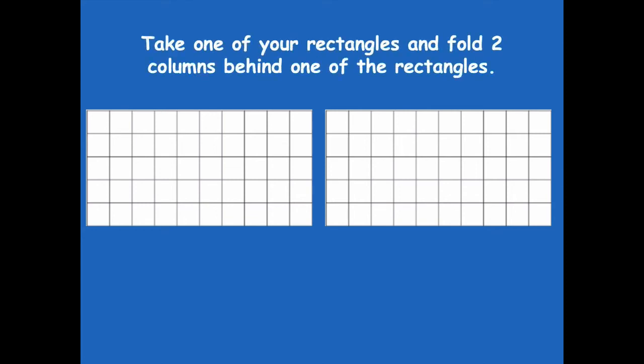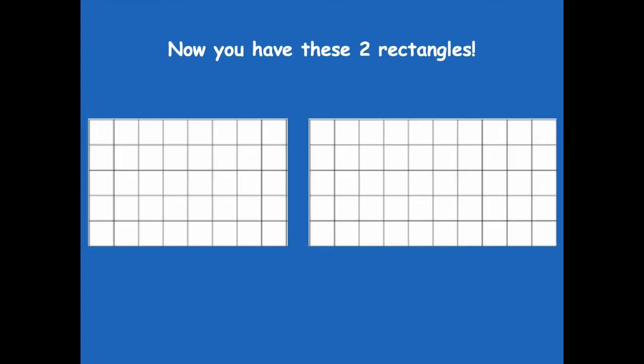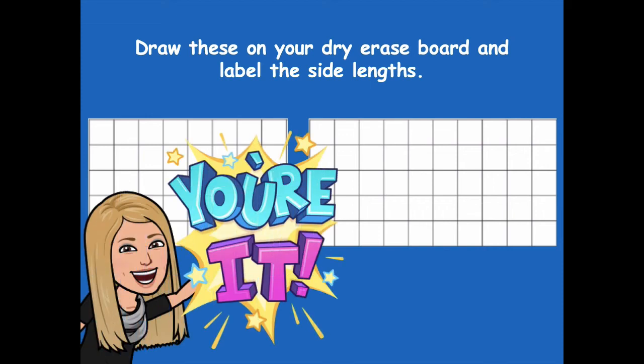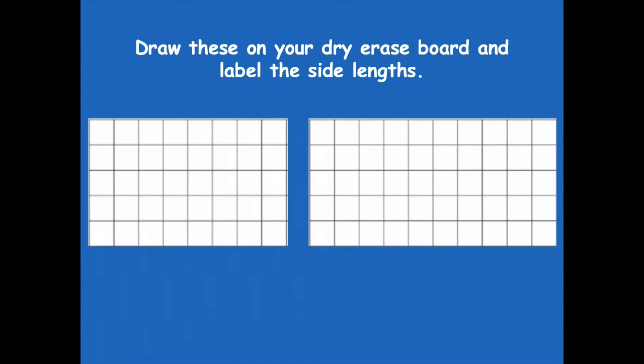Take one of your rectangles and fold two columns behind it to make the rectangle smaller. Where I have that red line, take two of those columns and fold them backwards. Now you're going to have two new rectangles. Draw these on your dry erase board and label the side lengths — these are not on your problem set. If it's a little tricky to use your rectangles, that's fine — you can look right on the screen and use mine. Pause, draw the rectangles with the side lengths labeled, and click play when you're ready.